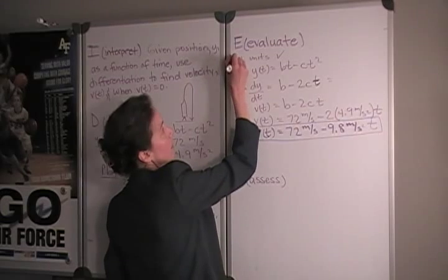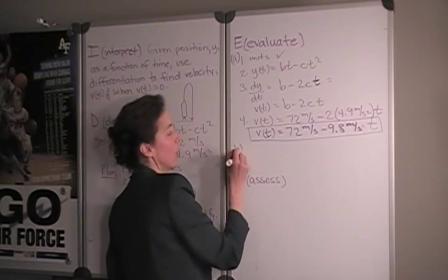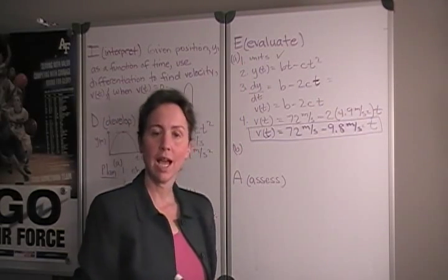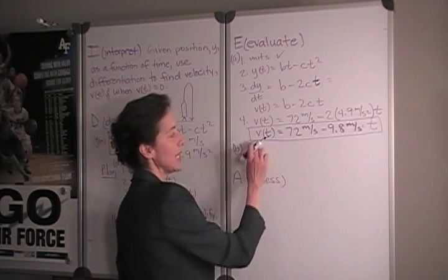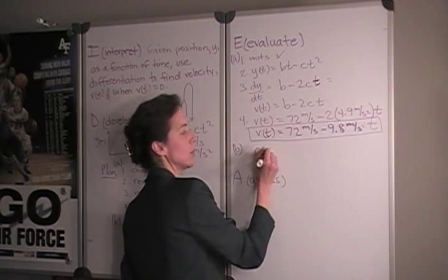Now, in Part B of this problem, that was Part A, we are asked about a specific time. We're asked for the time when the velocity is zero. So, we will take this expression and set it equal to zero.